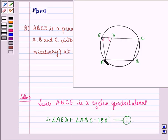This is because in a cyclic quadrilateral, the sum of opposite angles is equal to 180 degrees.